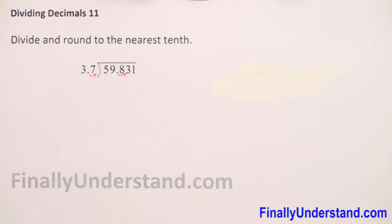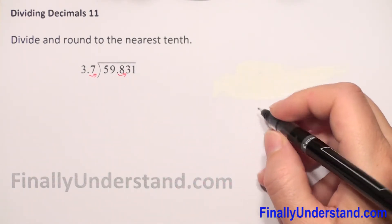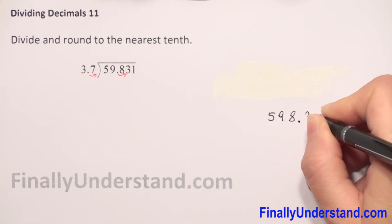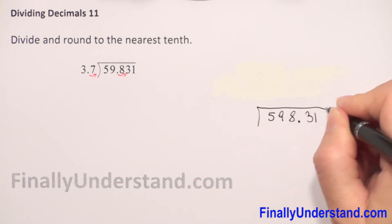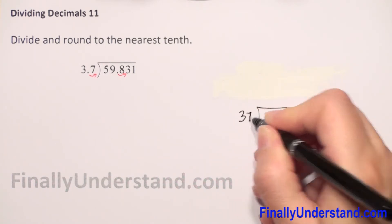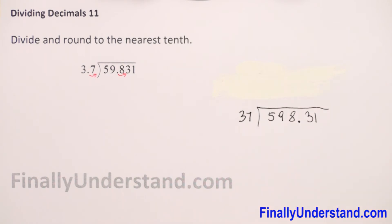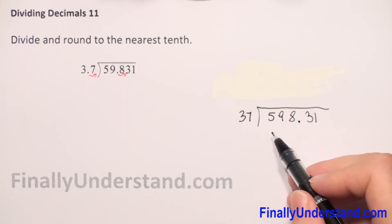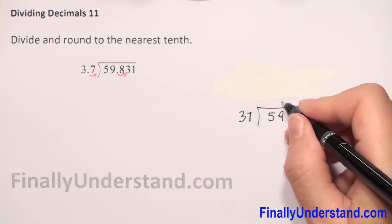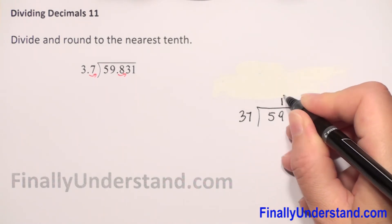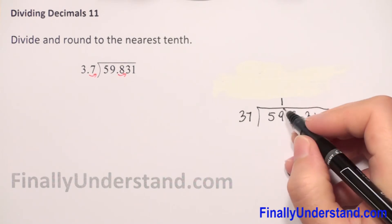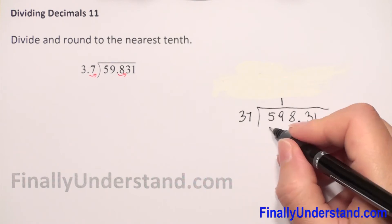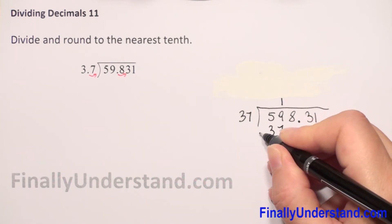We can now rewrite our example: we have to divide 598.31 by 37. We don't need to write anything after the decimal point in 37. Now, how many times does 37 go into 59? One time. We write 1 above, exactly in the same column, and then do the multiplication: 1 times 37 is 37.